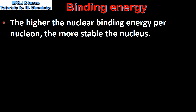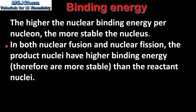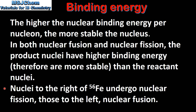So let's end with a summary. The higher the nuclear binding energy per nucleon, the more stable the nucleus. In both nuclear fusion and nuclear fission, the product nuclei have higher binding energy and therefore are more stable than the reactant nuclei. Nuclei to the right of iron-56 on the nuclear binding curve undergo nuclear fission; those to the left undergo nuclear fusion.